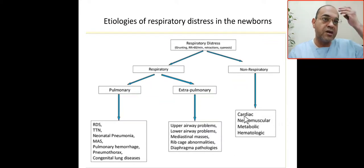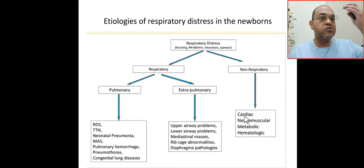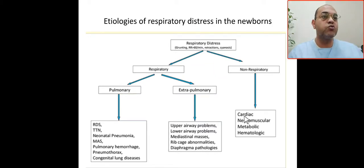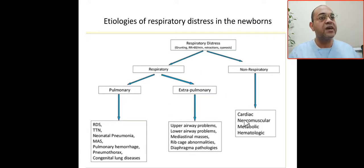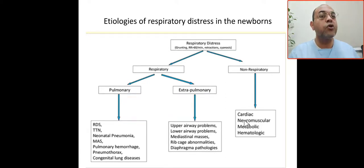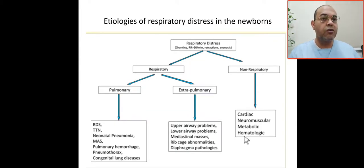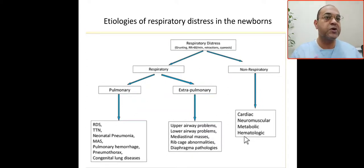Neuromuscular causes relate to intracranial hemorrhage where the respiratory center is affected, so the baby will present with respiratory distress. Metabolic causes include inborn errors of metabolism — organic acidemia or lactic acidemia. Hematological disorders such as polycythemia or anemia will also present with respiratory symptoms.